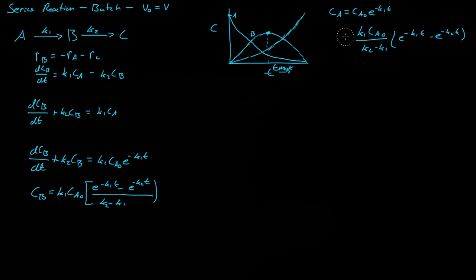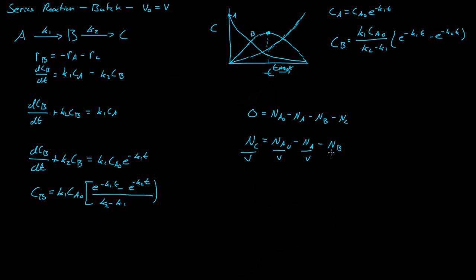Now if we do a mole balance around the entire system, the sum must equal zero because moles are not disappearing. So the initial moles of A minus the final moles of A minus the moles of B minus the moles of C equals zero. Rearranging, the moles of C equals initial moles of A minus final moles of A minus moles of B. Since the system is constant volume, we divide everything by V, giving us C_C equals C_A0 minus C_A minus C_B. So we don't need any ugly equations to find C_C — just a simple mole balance.